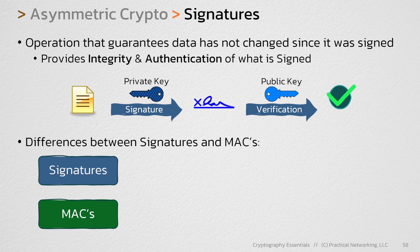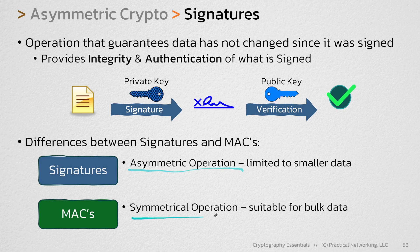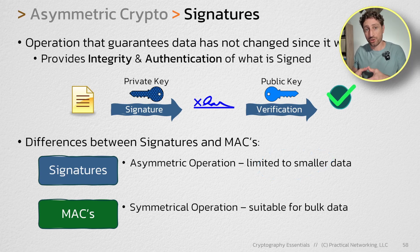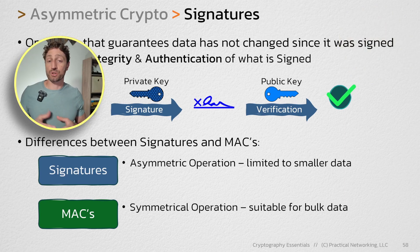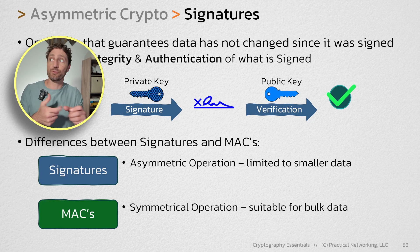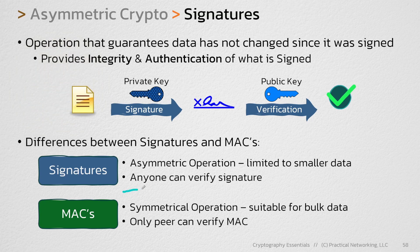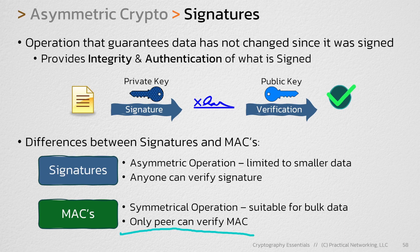The first major difference between signatures and MACs is that signatures are an asymmetric operation and MACs are a symmetric operation, which means MACs are more efficient to calculate on bulk data, whereas signatures are more limited to smaller datasets. The math you would use to do something with one value and then verify it with another value is going to be more complicated than doing and undoing something with the same value. The second major difference is who can verify the integrity and authentication of what you signed or MAC'd. Signatures can be verified by anyone — the public key is shared with anyone who wants it, which means anybody can verify the signature. Whereas with MACs, only the peer that has your secret key can verify the MAC and ensure the integrity and authentication of what you ran through your MAC.